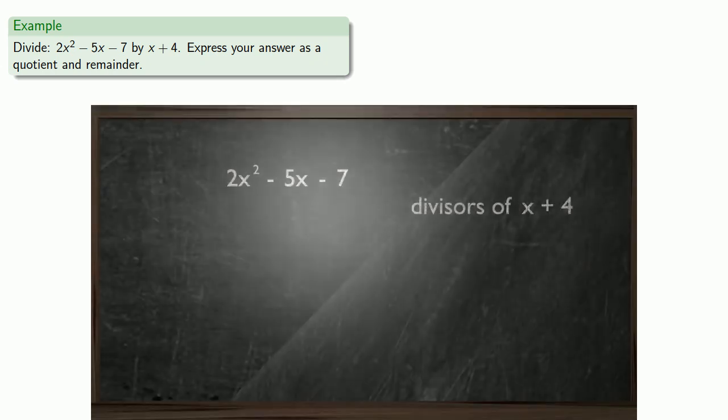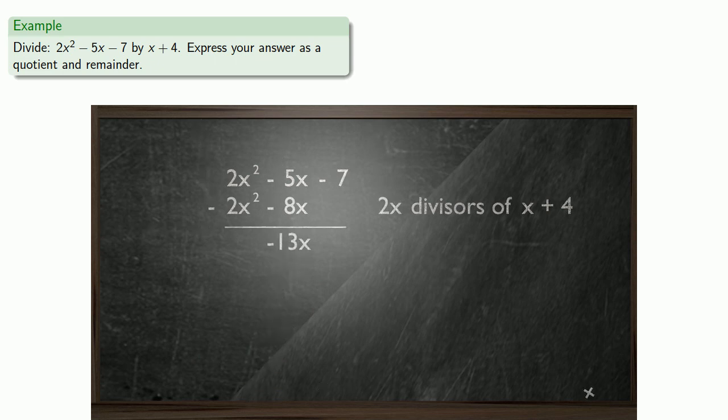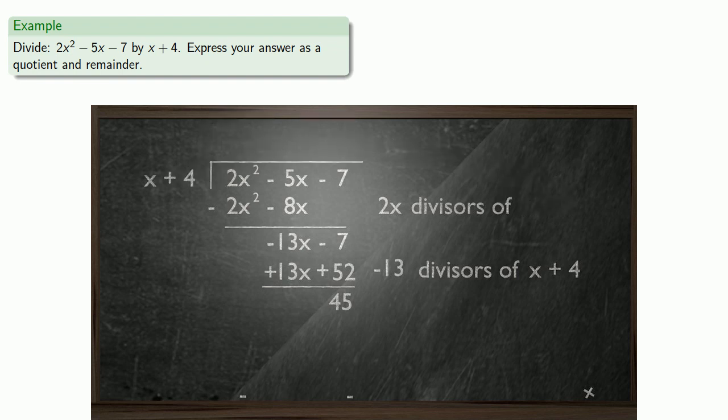When we did this division, we subtracted 2x divisors of x plus 4, then we followed that up by subtracting an additional negative 13 divisors of x plus 4, and we got our remainder and our quotient. We'll rearrange the pieces, move the divisor to the front, and the tracking for the number of divisors will move to the top of the division bar. So we have our quotient and our remainder.